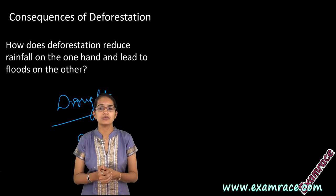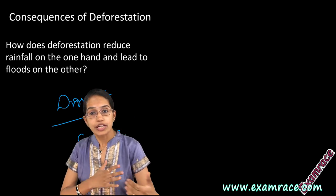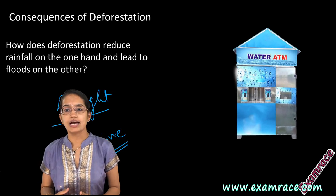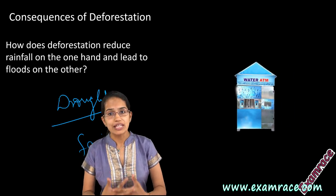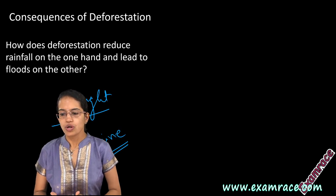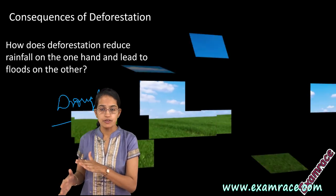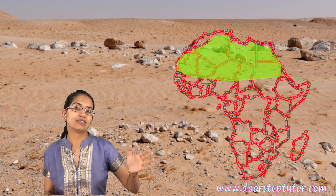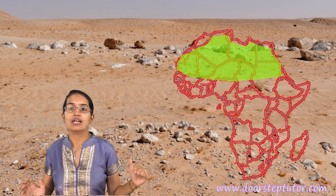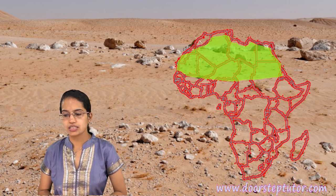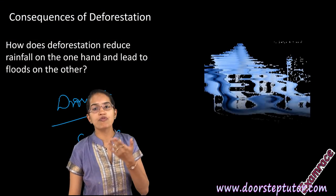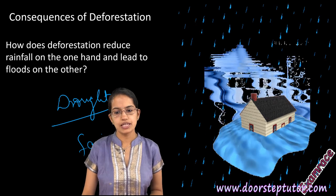To tackle problems of drought, water ATMs and water drains are new concepts being introduced. Water scarcity becomes a very major issue. The topsoil blows away or moves with the running water since there are no roots to hold the soil firmly, and as a result the area is slowly and gradually converted into desert. The present-day Sahara desert was once a very dense forest — that's how the process of desertification occurs. With movement of water, floods are also seen.